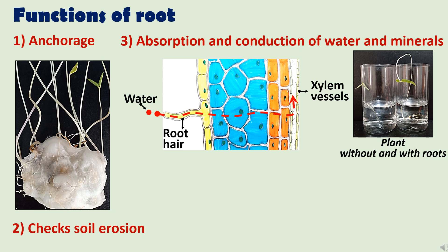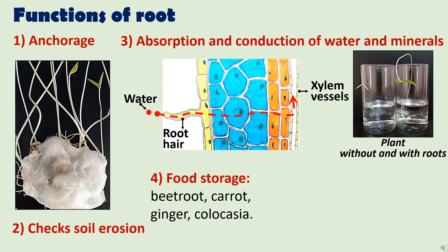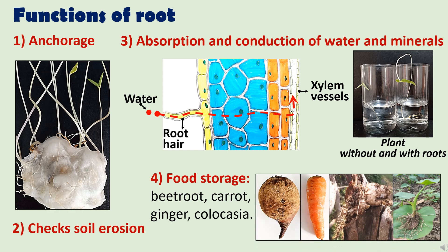This experiment shows how important roots are for a plant. In some plants, roots help in the storage of food material and become fleshy — examples are beetroot, carrot, ginger, and colocasia. So that was all about the basic introduction of various organ systems of a plant. If you like the video, please like, share, and subscribe. If you want a video on a topic of your choice, please write in the comment section. Thank you very much for watching.